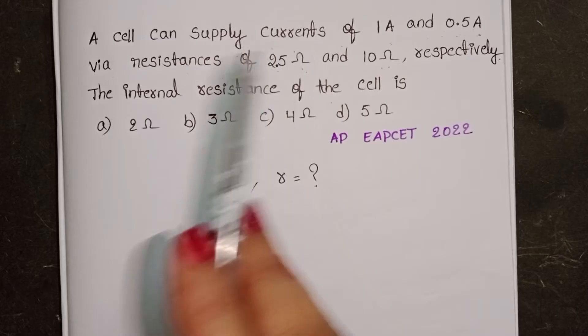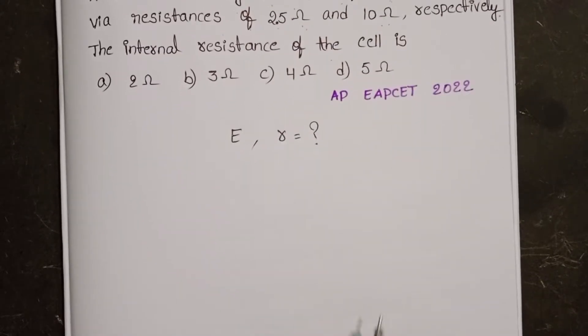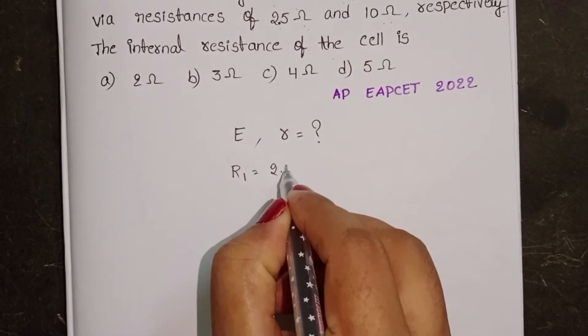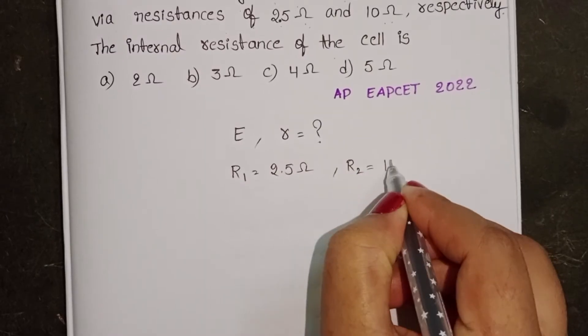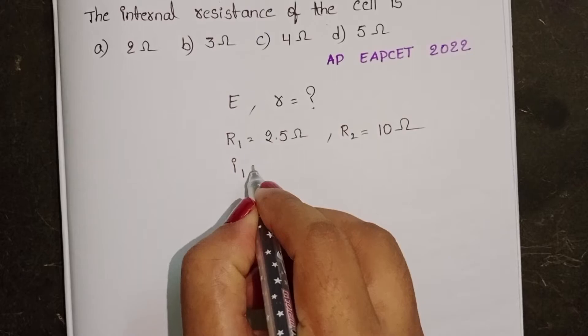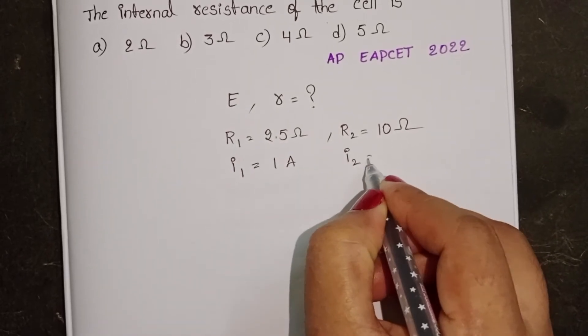By using this information, we have to find out the internal resistance. R1 is equal to 2.5 Ohm and R2 is equal to 10 Ohm. When R1 is connected in the circuit, current is 1A. When R2 is connected, then current is 0.5A.